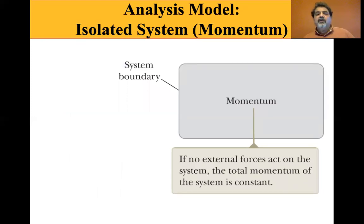And we've seen this picture before - there's the system boundary, the momentum is inside the system boundary. If no external forces act on the system, the total momentum of the system is constant. So the delta p total is equal to zero - there won't be any change in momentum.